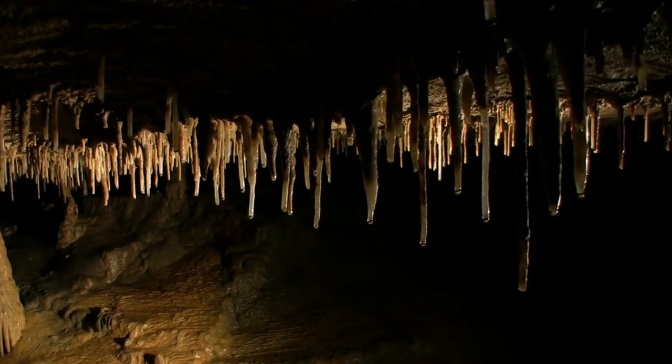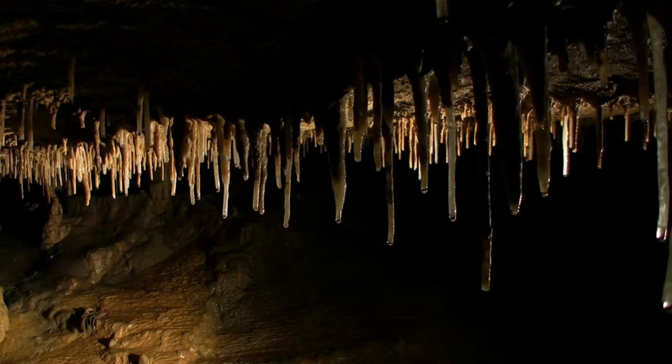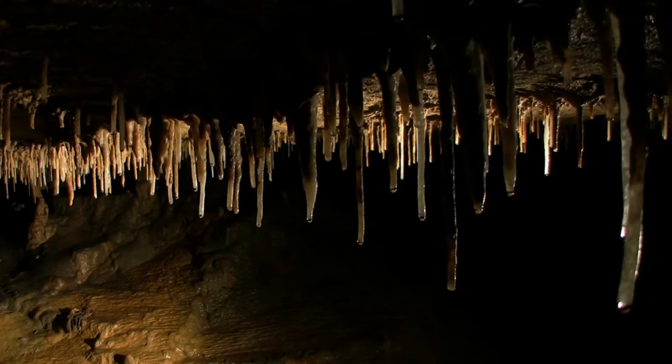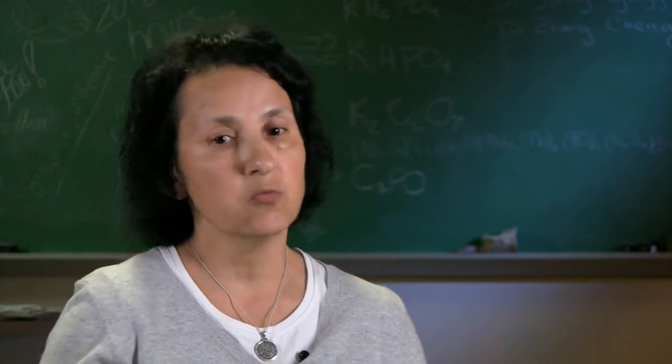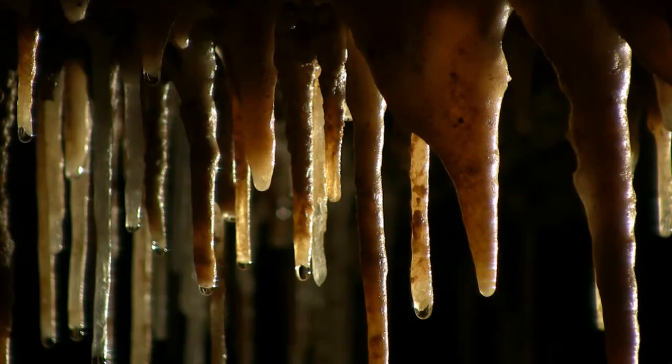Soda straws look like little soda straws. They're the simplest kind — a variety of stalactite. Sometimes stalactites start out as soda straws. They're deposited the exact same way a big stalagmite or stalactite would be: by water dripping through little cracks in the ceiling and depositing a little bit of calcium carbonate. If there are impurities in the water, you can get stalactites and soda straws that are different colors — some will be clear, some will be white. I've seen red ones; you can get all sorts of wild and crazy colors.